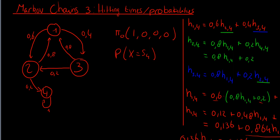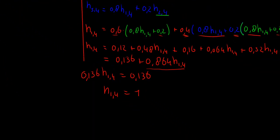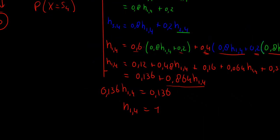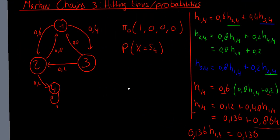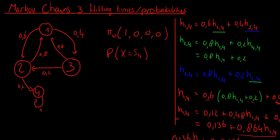That is logical, because state 4 is the only state where once you enter it, you never get out — so you're bound to end up there if you look at infinitely many time steps. Now, what if we made another absorbing state? For instance, if we remove the outgoing probability from state 3 and make state 3 also absorbing.